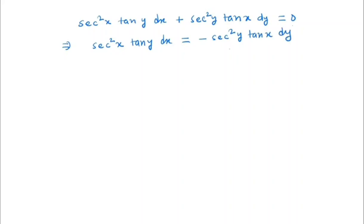Now we will try to separate x and y. For that, what we will do is take this tan x to the left-hand side and this tan y to the right-hand side. So we get sec²x dx / tan x = -sec²y dy / tan y.